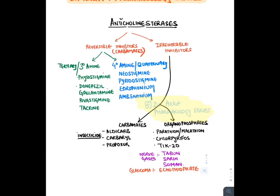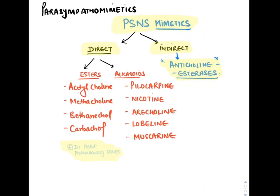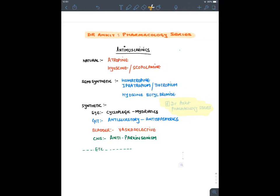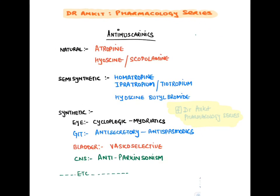Parasympathomimetics increase parasympathetic activity both directly and indirectly. Parasympatholytic drugs, also known as anti-muscarinic drugs, produce the opposite action — they block acetylcholine receptors. Natural examples include atropine from Atropa belladonna and datura plants, and hyoscine or scopolamine from the hyoscyamus plant. We also have semi-synthetic and totally synthetic derivatives used for specific organs like the eye, GIT, bladder, and CNS. Now let's discuss the questions.